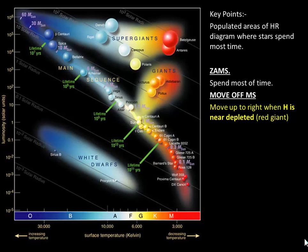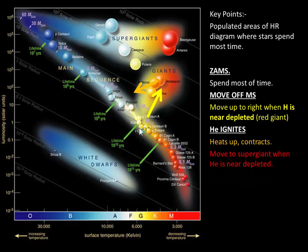So our Sun, for example, will move from its position, which is here, to the upper right and become a red giant. Then suddenly the helium will ignite and it will start burning helium into carbon. Then it will heat up, it will contract, and then it will become a yellow giant. And then it will move to a supergiant or the second giant phase until the helium is nearly depleted.